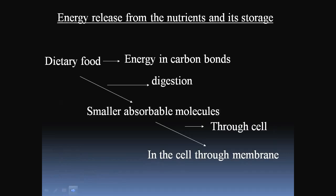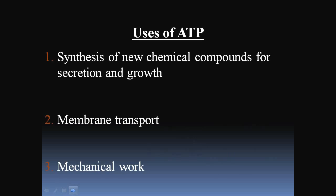Energy is released from nutrients and stored. The energy is mainly derived from dietary food in the form of carbon bonds. Through the process of digestion, these become smaller absorbable molecules that enter cells through the cell membrane — that means transport across the cell membrane. The uses of ATP are: synthesis of biochemical compounds for secretion and growth, membrane transport, and mechanical work.